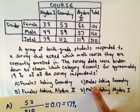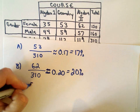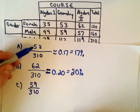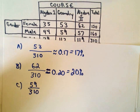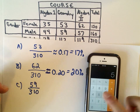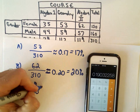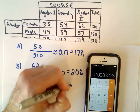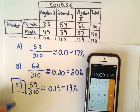C says males taking geometry. There are 59 males taking geometry. That looks like it's got to be correct — it's more than 53 and less than 62, but closer to 62. So 59 divided by 310 is roughly equal to 0.19, which is 19%. So answer choice C is definitely the correct choice.